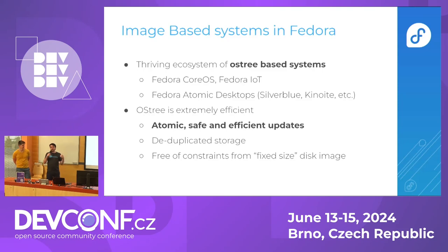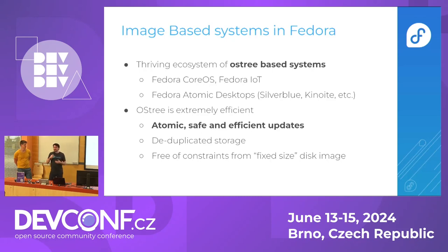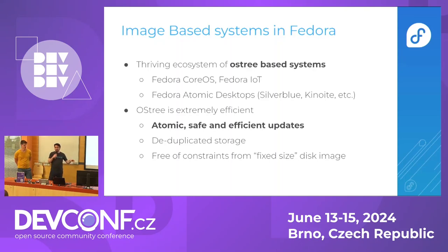With OSTree comes deduplicated storage. When you do an update and get a new version of your operating system, it doesn't mean you consume twice the disk space. OSTree is intelligent enough to deduplicate storage — it only downloads what is needed, keeping everything that is the same. Another nice property of OSTree is that it's not a fixed-size image, so you can boot the same image on a Raspberry Pi with a small SD card or on a cloud server with huge disks. There's no predefined size, which makes them very flexible.